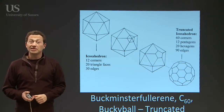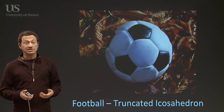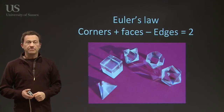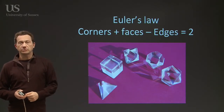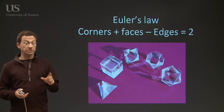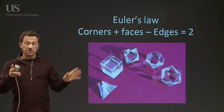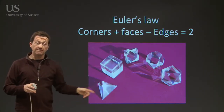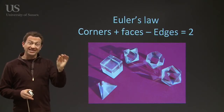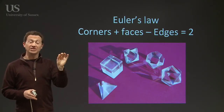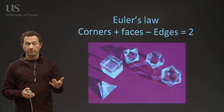So C60 is actually a truncated icosahedron — it's also a soccer ball, which is a bit easier to remember. There's a thing called Euler's law, which is a nice mathematical law that applies to a lot of structures. If you take a shape such as these beautiful crystals here, if you add the number of corners to the number of faces and take away the number of edges, you always get the same number — you get two, for example.